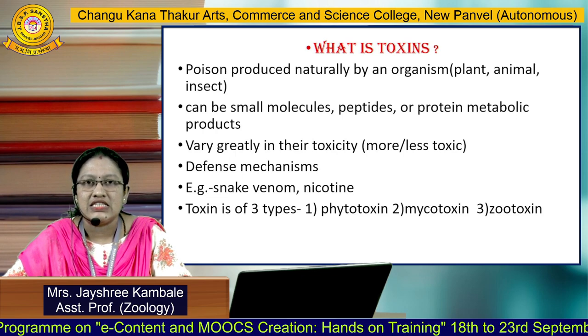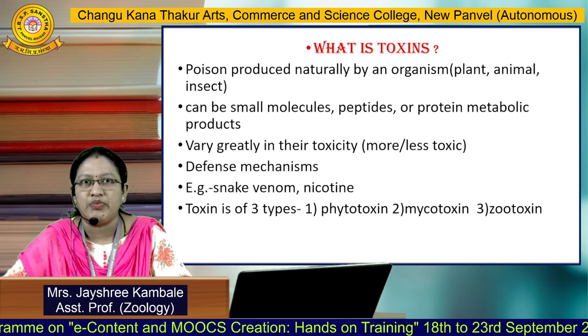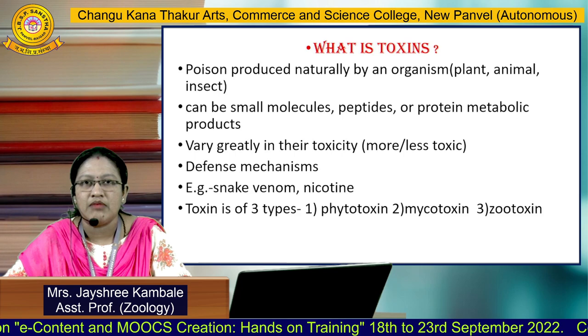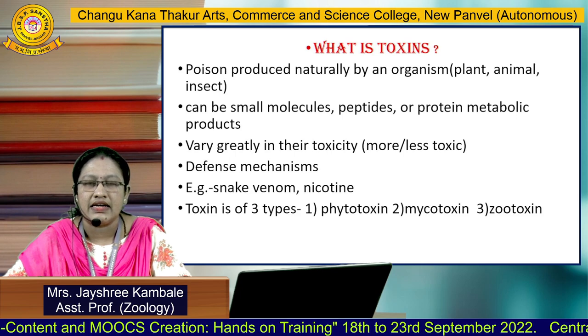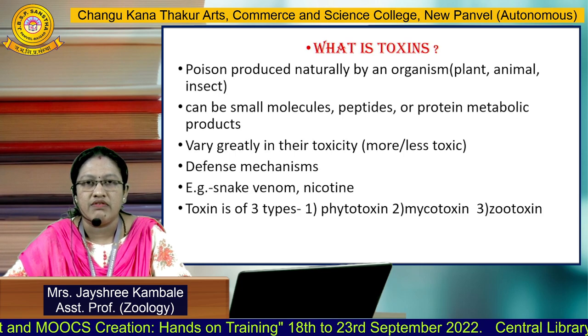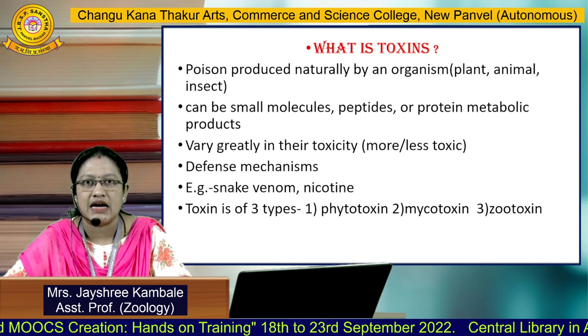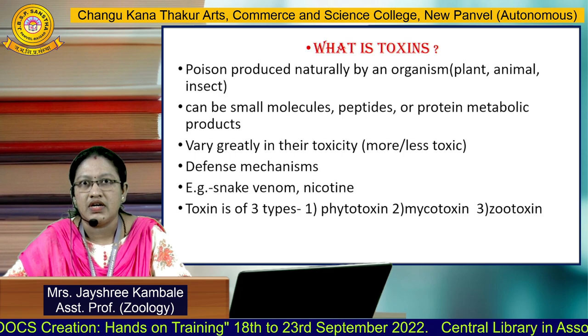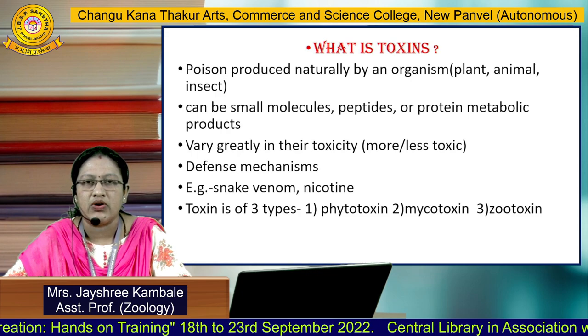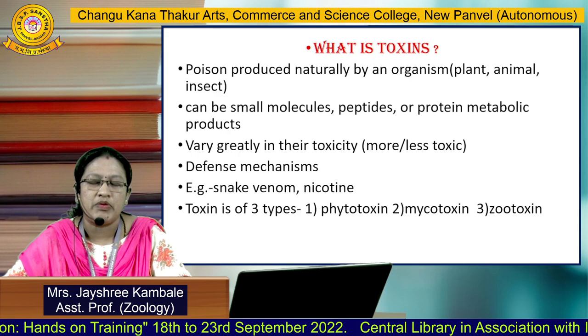Usually, these toxins are produced by all plants, animals and insects in the defense mechanism. Examples include snake venom, nicotine, and scorpion venom.